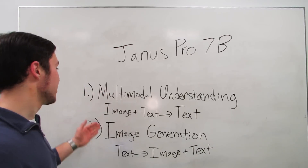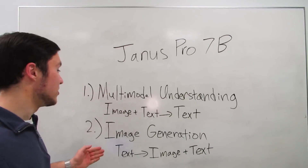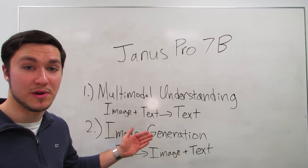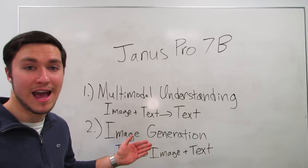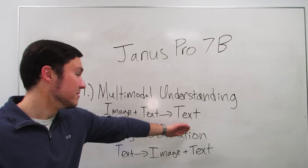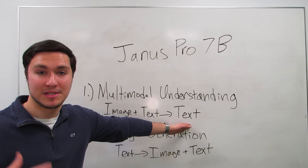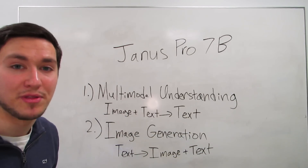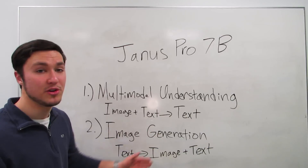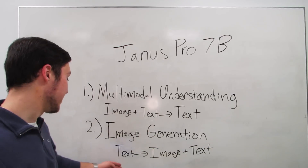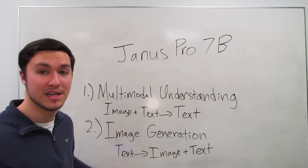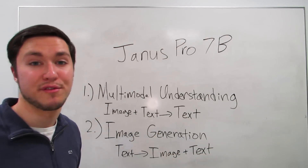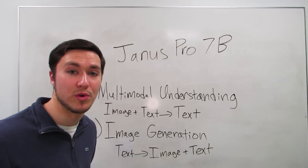Specifically with multimodal understanding, where you give an AI model an image as well as a prompt asking a question about that image, and the model outputs text as a response. As well as generating new images, where you give a model a prompt and it generates a new image along with some kind of caption.